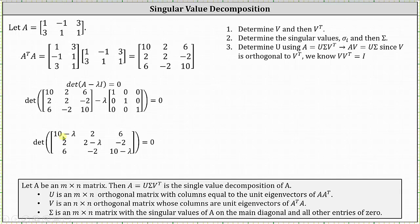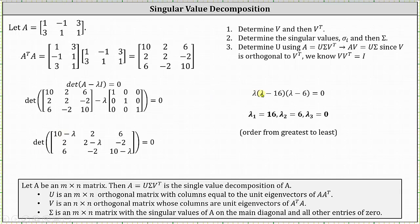The factored form of the characteristic equation is lambda times the quantity (lambda minus 16) times the quantity (lambda minus 6), which must equal zero. Giving the eigenvalues from greatest to least, we have lambda sub one equals 16, lambda sub two equals six, and lambda sub three equals zero.